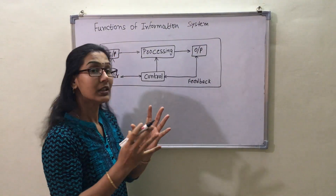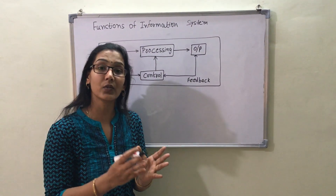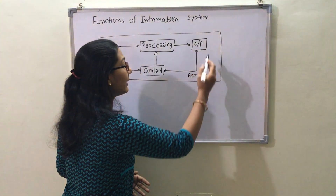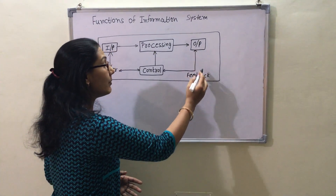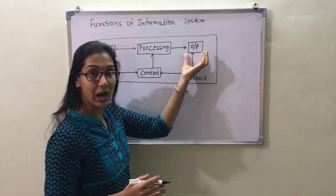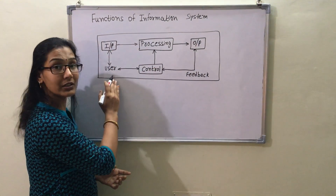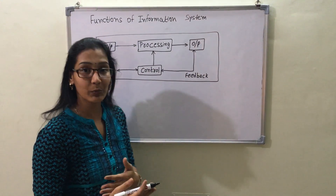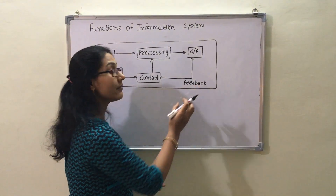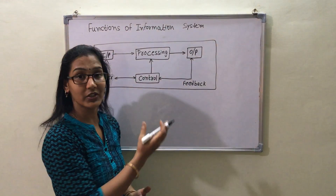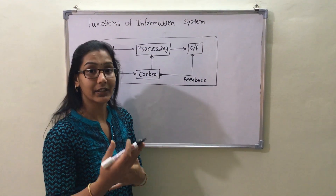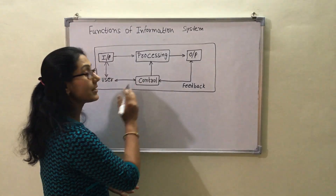Feedback comes from the output and is sent back to the user for improvement at the input stage. Feedback is very critical in an information system and is mainly used for improvement at the input stage.